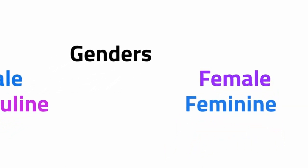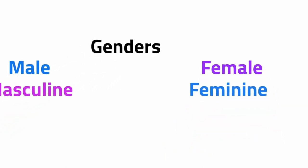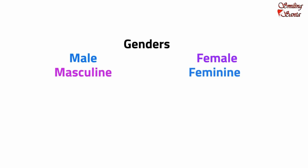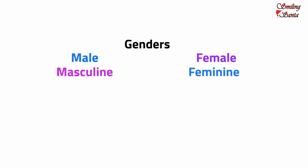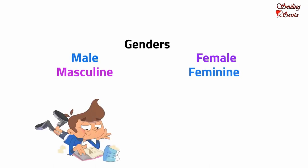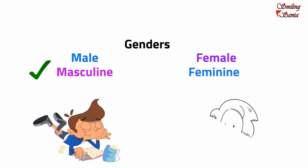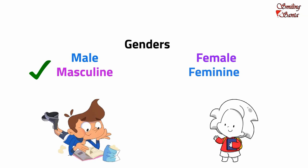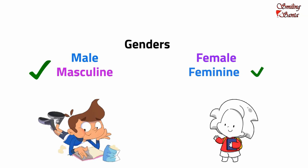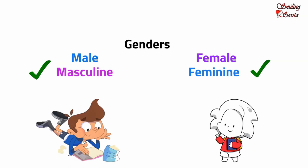Males are referred to as masculine gender and females are referred to as feminine gender. We use different words to refer to the masculine gender and the feminine gender. A boy is a male and hence refers to the masculine gender, while girl refers to a female and hence refers to the feminine gender.